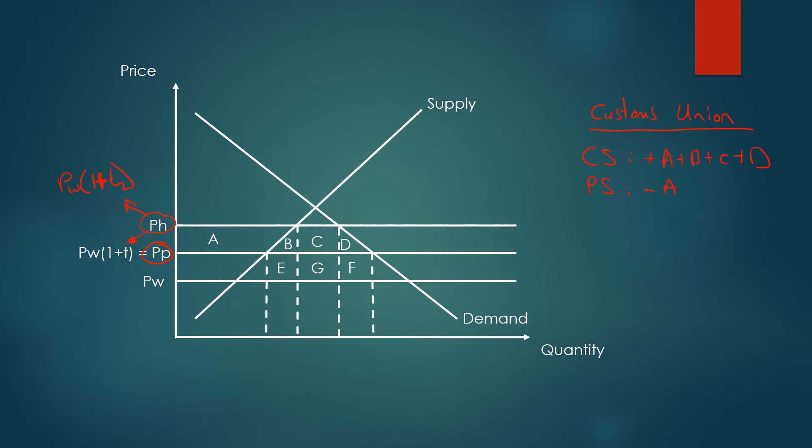And what about tax revenue? Well, essentially, we used to be getting a tariff of this amount and we used to be importing this amount. Our old tax revenue used to be this much. So we can say tax revenue has fallen by minus C, minus G.